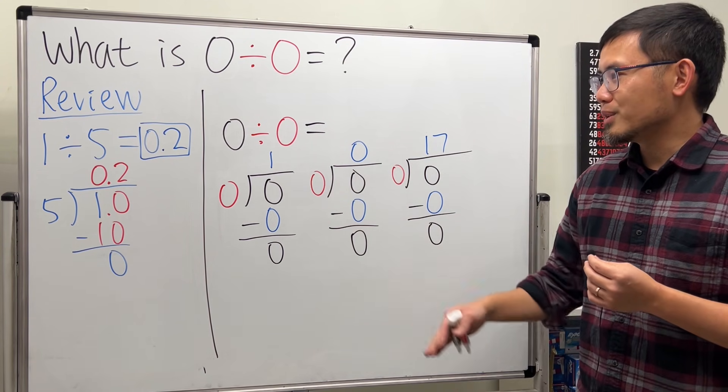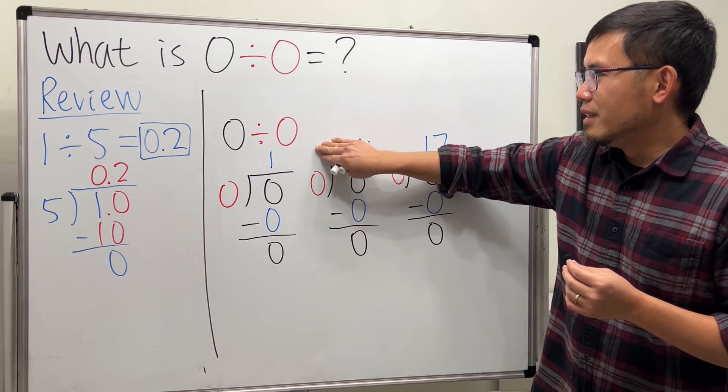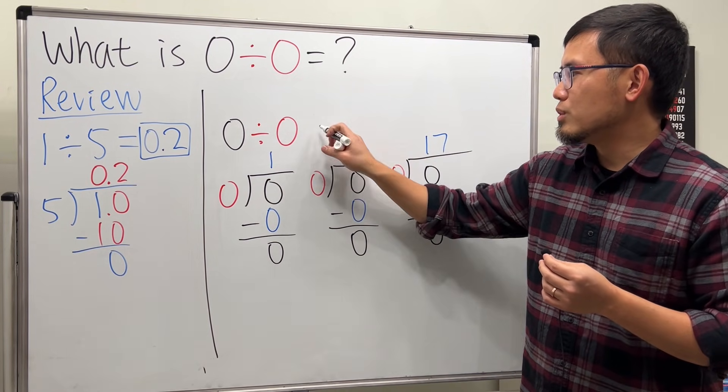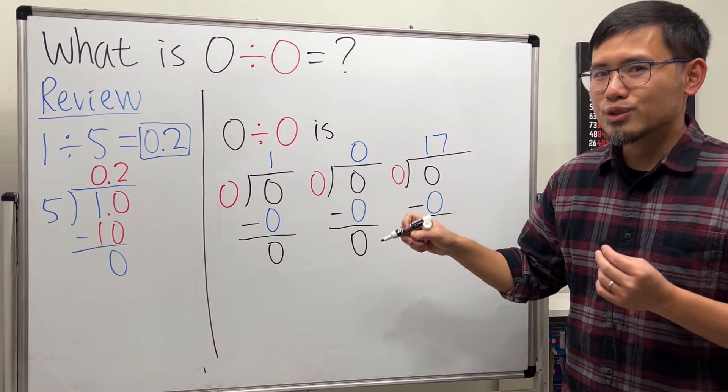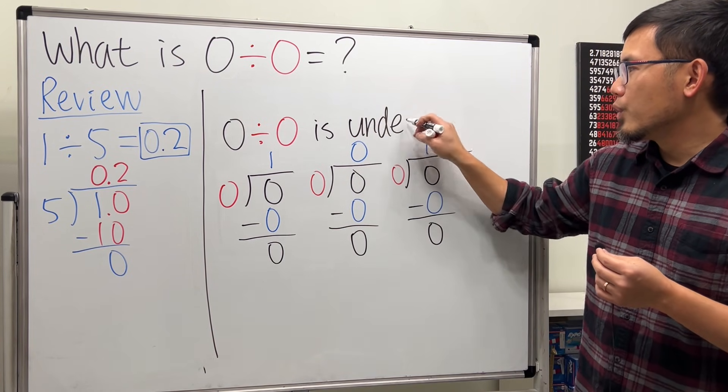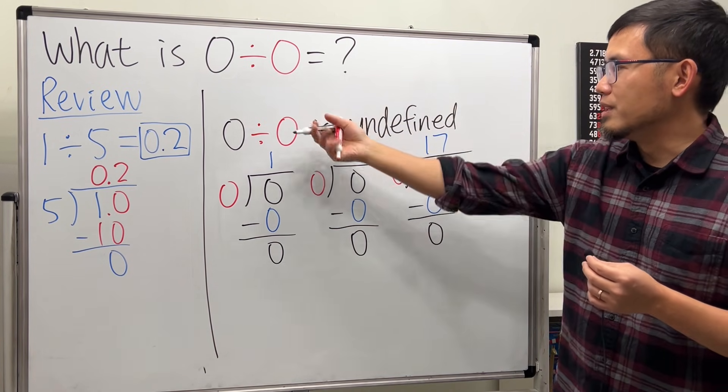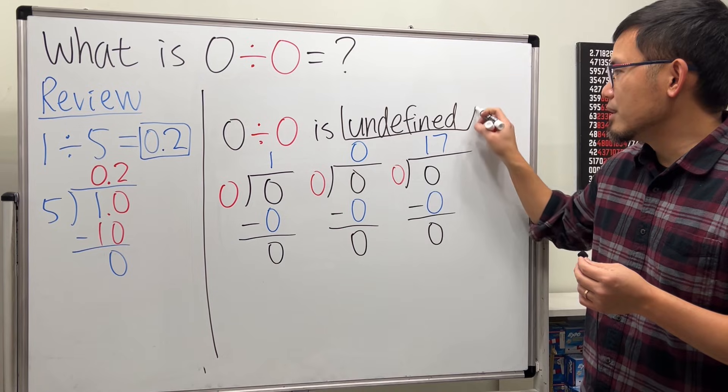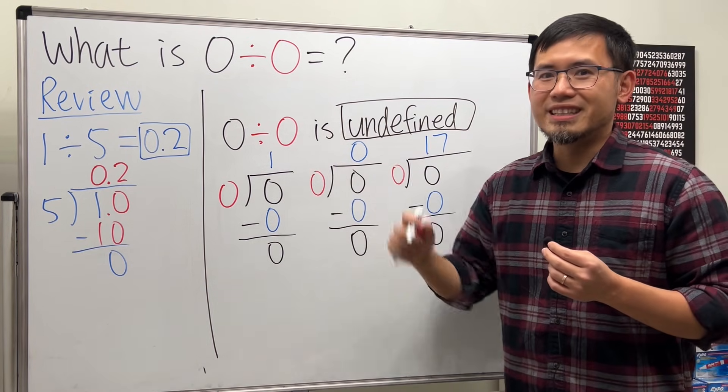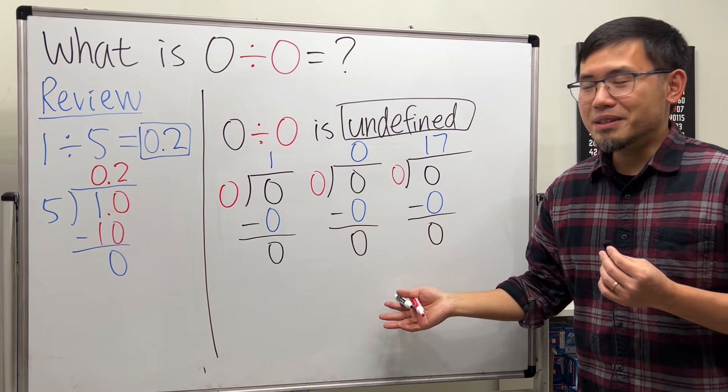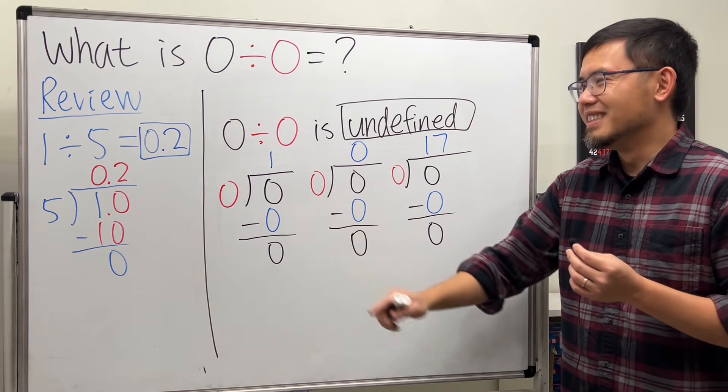Well, no, we are not going to take any of them. So in this case, zero divided by zero is also undefined, meaning we don't have an answer for this right here. So I'll just put it down and box it, just like that.